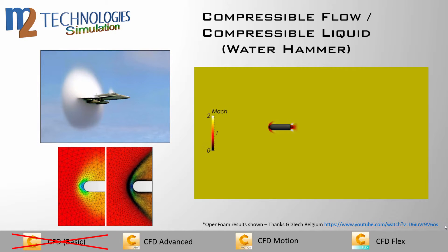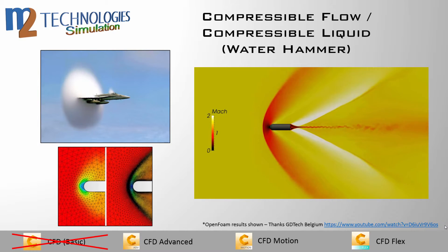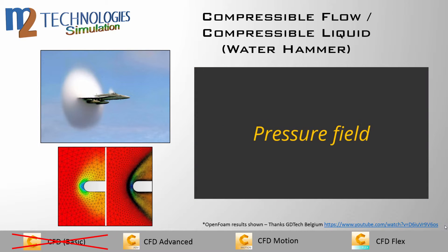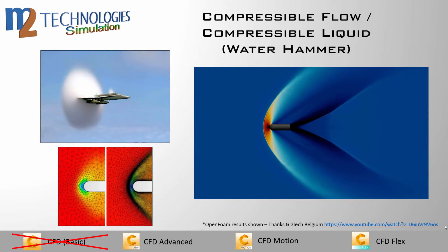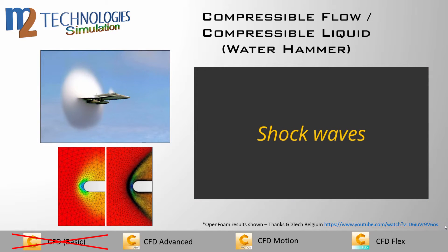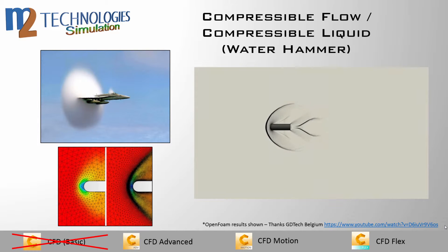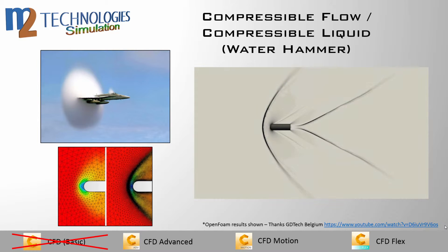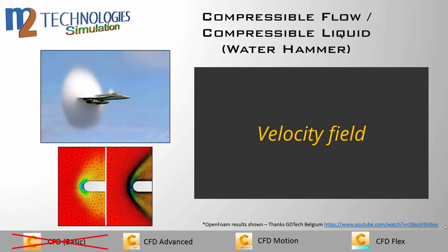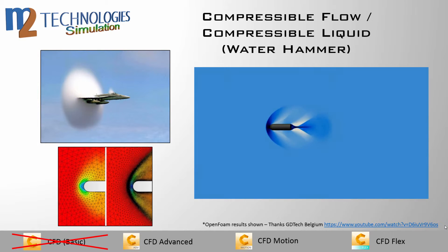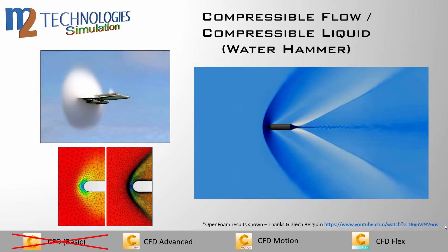The basic solver supports incompressible flow, internal or external, turbulent or laminar. Flow is considered incompressible below Mach 0.3, and most engineering flows fall into this category. If compressible flow is needed, the advanced solver is required at a minimum. When fluid flow is compressible, the fluid density varies with its pressure. Compressible flows are usually high-speed flows with Mach numbers greater than 0.3. Examples include aerodynamic applications such as flow over a wing, as well as industrial applications such as flow through high-performance valves. Compressible flow analysis also allows for the formation of shocks, including water hammers in the case of a liquid.